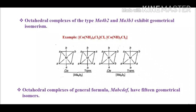Octahedral complexes of the general formula MABCDEF, where all six ligands are different, have 15 geometrical isomers. This is a very important fact to note.